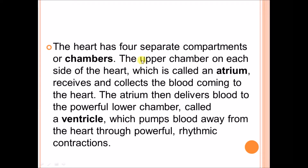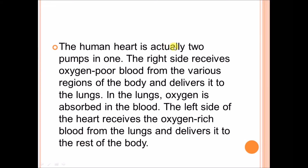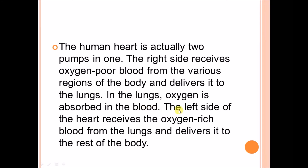The heart has four separate chambers. The upper chambers on each side, called the atria — right and left atrium — receive and collect blood coming to the heart, and then deliver blood to the powerful lower chambers called the ventricles. The right and left ventricles pump blood away from the heart through powerful rhythmic contraction. The human heart is actually two pumps in one. The right side receives deoxygenated blood from various regions of the body and delivers it to the lungs, where oxygen is absorbed into the blood. The left side receives oxygenated blood from the lungs and delivers it to the rest of the body.